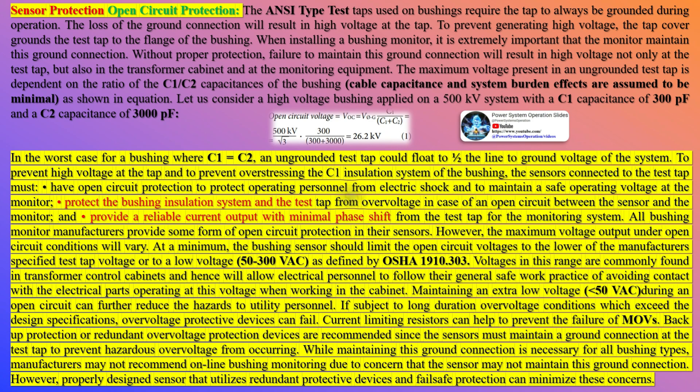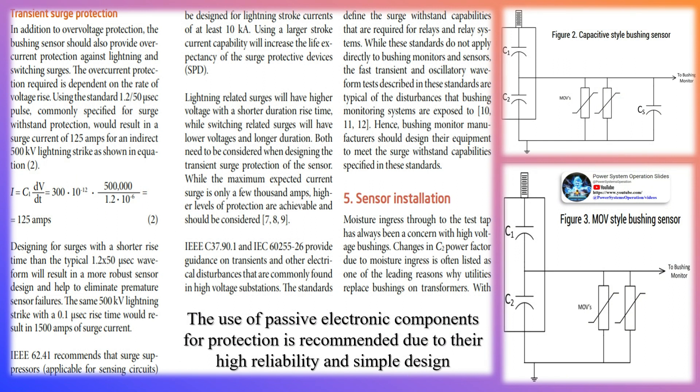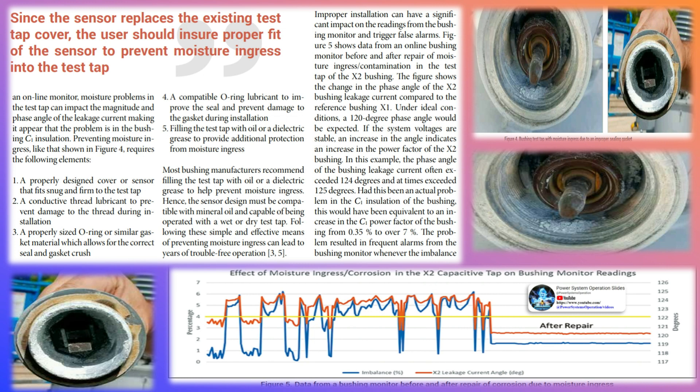Step 4: Regular inspections — regularly inspect your bushings for common causes of failure and implement good maintenance practices. Step 5: Maintenance schedule — implement a maintenance and lubrication schedule so there is minimal risk of unexpected lubricant degradation. Step 6: Online monitoring — use online monitoring tools to measure and record the bushing leakage current, including magnitude, harmonic content, and relative phase of the leakage currents in a set of three bushings, which provides information about the state of the bushing insulation.